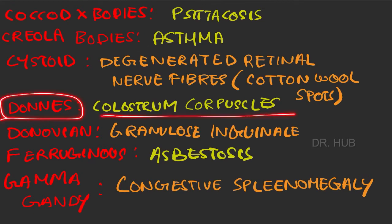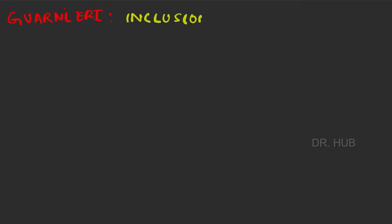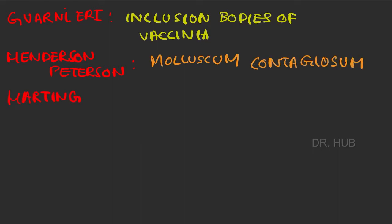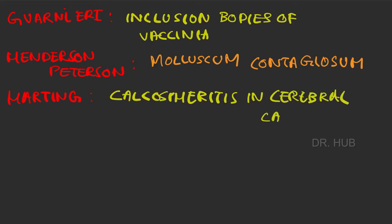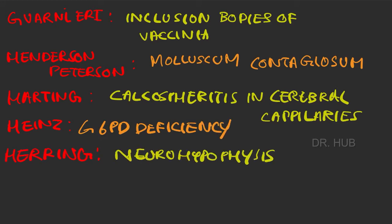Next, there is the Guarnieri body, seen in the inclusion bodies of vaccinia. Henderson-Paterson body in molluscum contagiosum. Harting body in cerebral capillaries. Then Heinz bodies in G6PD deficiency. Herring bodies in the neurohypophysis.